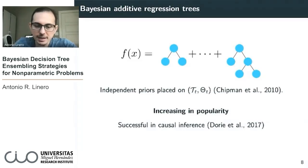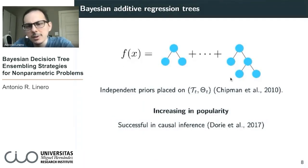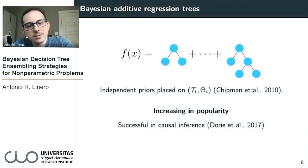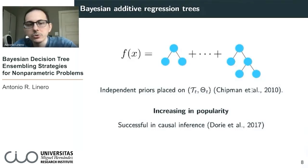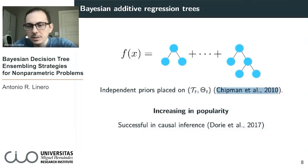The Bayesian additive regression trees approach represents my function f as a sum of many decision trees. I put independent priors on each of the decision trees and get a posterior, doing some Bayesian inference. You can look at the details for what the prior is on the trees in this paper.